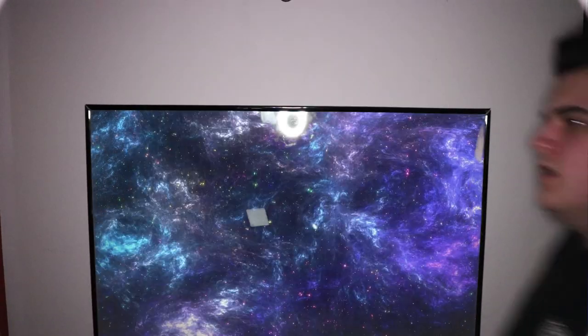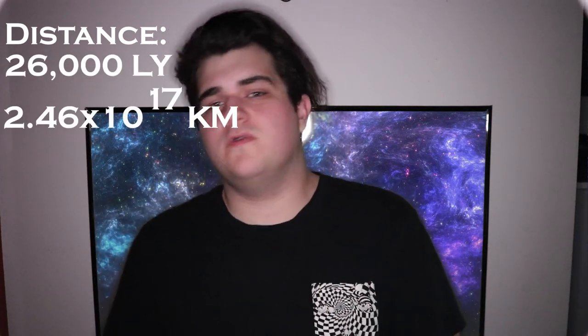Sagittarius A* lies at the center of our galaxy, giving it its spiral shape, as displayed in this image. Scientists observe the flow of matter around it and, coupled with Kepler's law of planetary motion, can determine its density and mass. It sits about 26,000 light years away — roughly 2.46 × 10¹⁷ kilometers — with a mass of about 4.2 × 10⁶ solar masses, or approximately 4.3 million Suns.